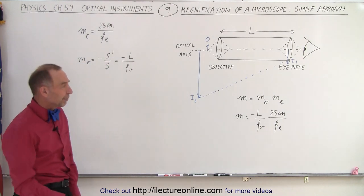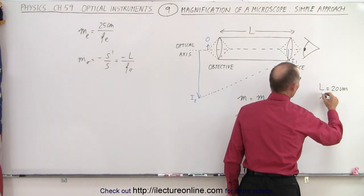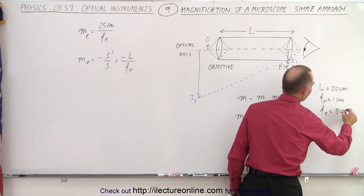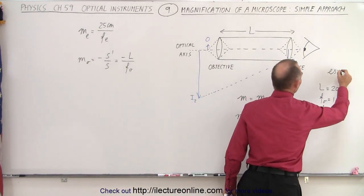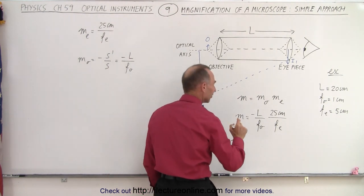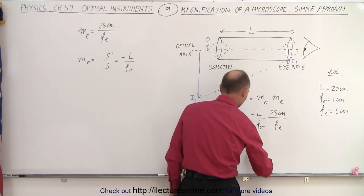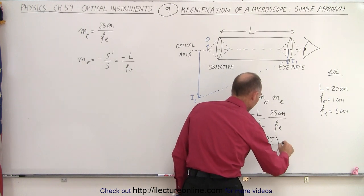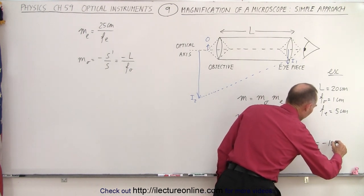Let's see what that would mean with some numbers. Say L equals 20 centimeters, the focal length of the objective equals 1 centimeter, and the focal length of the eyepiece equals 5 centimeters. Using those example numbers, M equals minus 20 centimeters divided by 1 centimeter, multiplied by 25 centimeters divided by 5 centimeters. This gives minus 20 multiplied by positive 5, or minus 100.